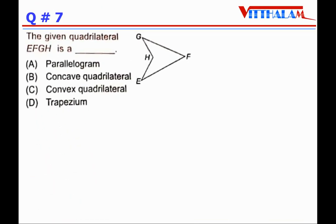The given quadrilateral EFGH is a concave quadrilateral, because one of its angles is greater than 180°. That's why the answer is concave.